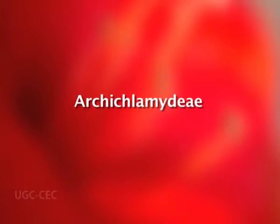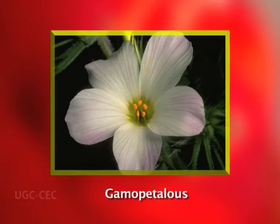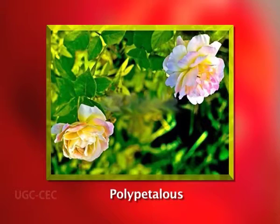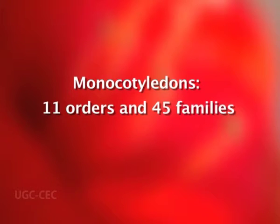The Engler and Prantl system dominates over all previous natural systems of classification, though it is certainly based on those systems. It is based on the increasing complexity of plant parts, particularly the essential whorls of flowers. The gamopetalous condition is considered more advanced than the polypetalous condition. An indefinite number of stamens and carpels are primitive relative to a definite number. Monocotyledons have been classified into 11 orders and 45 families.